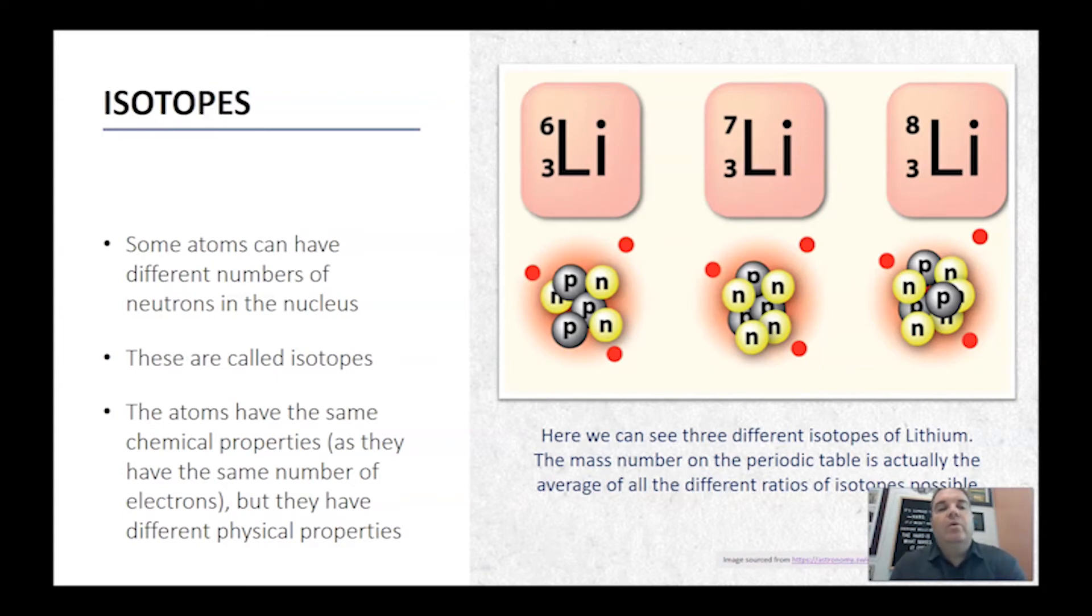Isotopes are what we call atoms with the same number of protons but a different number of neutrons. So here we've got an example of lithium and there's actually three different isotopes. So in the first one here we've got three protons, three neutrons, three electrons. So if you're looking at here the atomic number is three. So that gives us three protons. The mass number is six. So six take three gives us three neutrons.